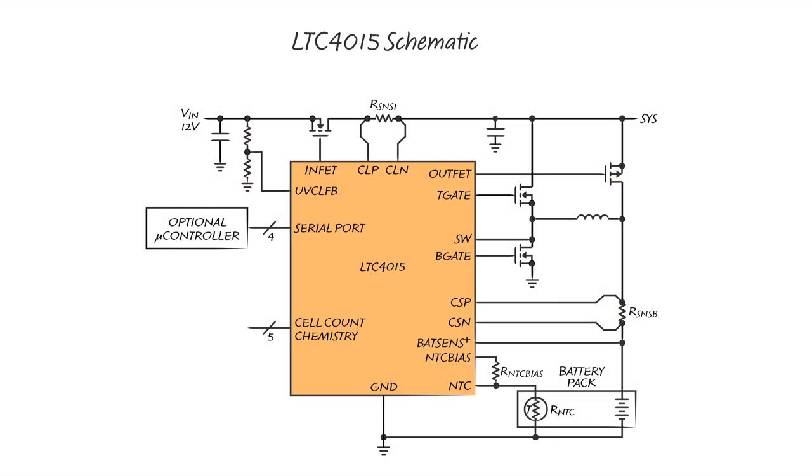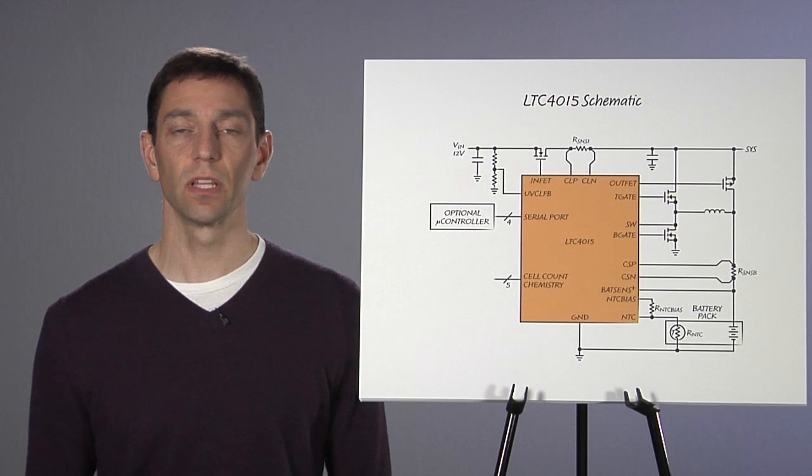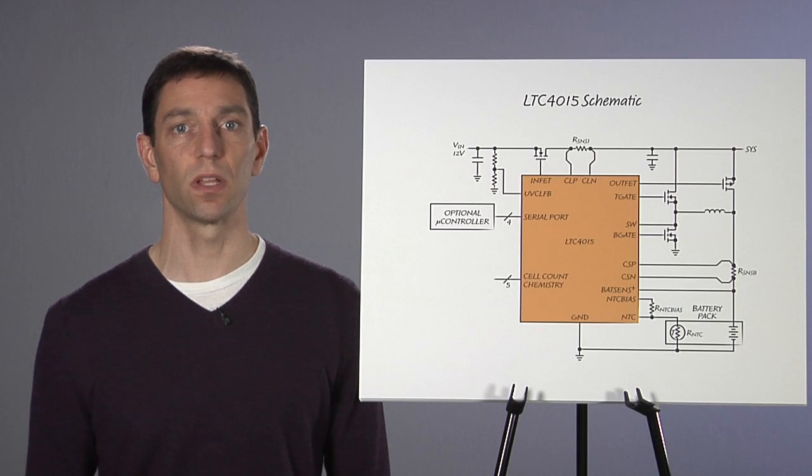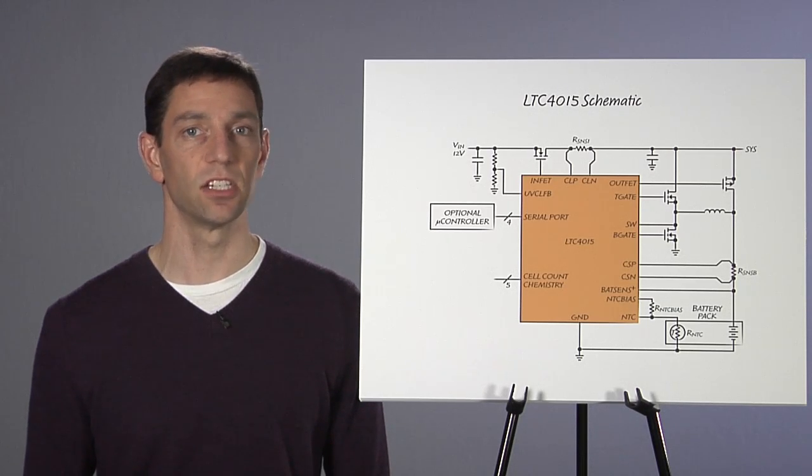To accommodate these applications, the LTC4015 combines a state-of-the-art 35-volt step-down switching controller with a 14-bit analog-to-digital converter, or ADC, and Coulomb counter. Nine different charge algorithms can be selected to charge lithium-ion, lithium-ion phosphate, or lead-acid batteries. For lithium chemistries, the LTC4015 can charge up to nine series cells.